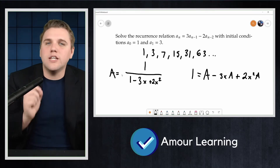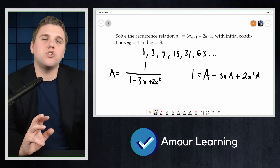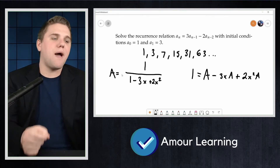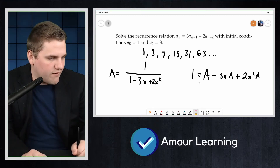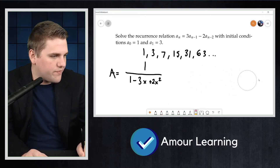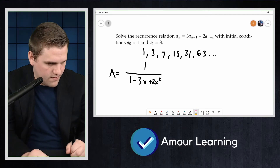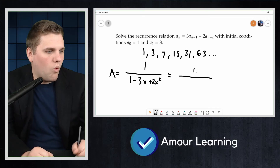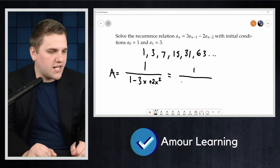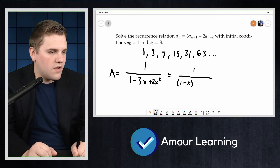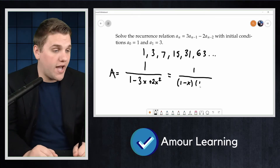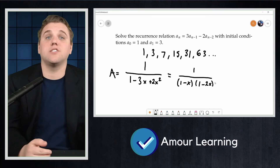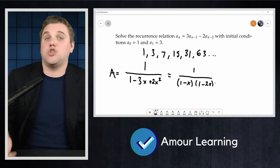First, let's break up the generating function into two simpler ones. For this we can use partial fraction decomposition. We start by factoring the denominator: 1 over (1 − 3x + 2x²) equals 1 over (1 − x)(1 − 2x). Partial fraction decomposition tells us we can write this fraction as the sum of two fractions.